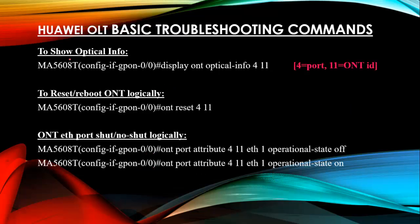To show optical information, go to interface mode and use 'display ont optical-info 4 11' — where 4 is your PON port and 11 is your ONT ID. This command shows how much optical power your ONT is receiving.